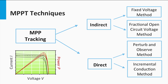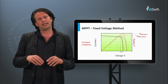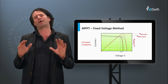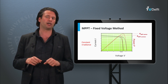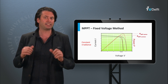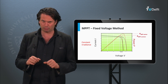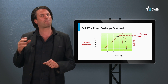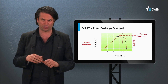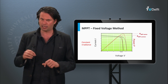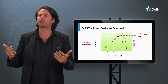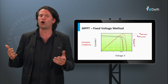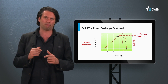Let's talk about indirect MPP tracking first. In this kind of tracking, simple assumptions and periodic estimations of the MPP are made with easy measurements. An example from practice is the fixed voltage method, which is based on adjusting the operating voltage of the solar module only on a seasonal basis.